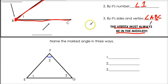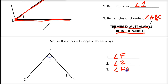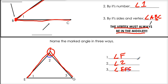Let's do a little example: name the marked angle in three ways. The marked angle is right here. First, we use the vertex of that angle — that's angle F. The other way is to use the number — that's angle two. And now, let's use three letters. The vertex always has to be in the middle, so we can't call it FGE because G is not the vertex. So, starting from the other side: E, F, G — the vertex F is in the middle, so this is angle EFG.